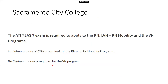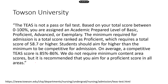For Sacramento City College, they have RN, LVN-to-RN, and VN programs. The minimum score is 62% for RN and RN mobility programs, while for VN there is no minimum score. For Towson University, students are assigned to different levels based on their score, and the minimum required for admission is a total score at the proficient level, roughly the second-year level, which is a score of 58.7% or higher. Notably, they explicitly state that you should aim higher than the minimum to be competitive for admission.